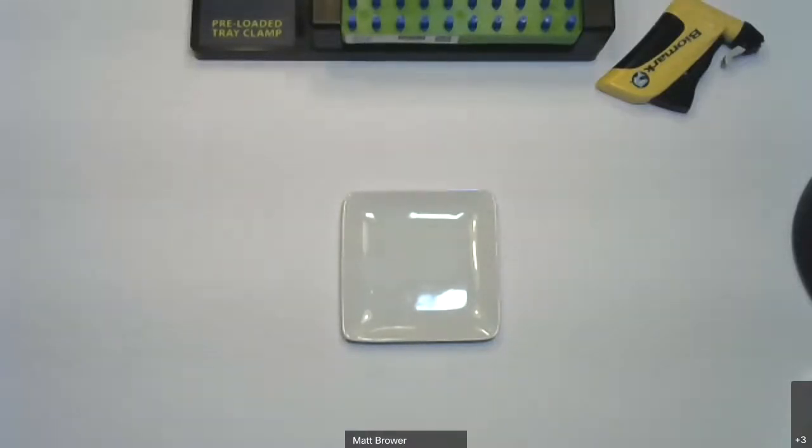The reason why we have a wide variety of different tag sizes obviously relates to the size of the animal being tagged. But there's also a relative read range association with each of these different tag sizes. Simply put, the larger the tag, the larger the read range. I figured for this webinar, I would start with the smallest FDXB tag that we offer, and then move to the largest tag, and then I'll cover HDX at the end.